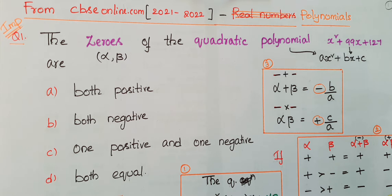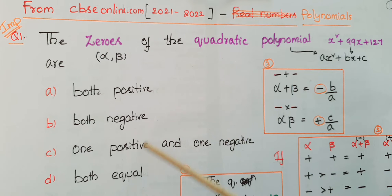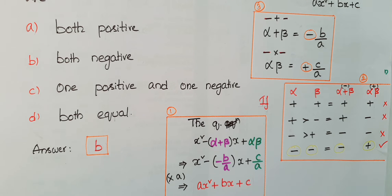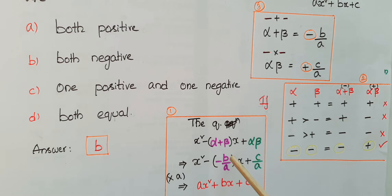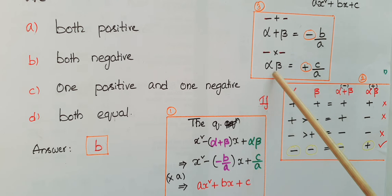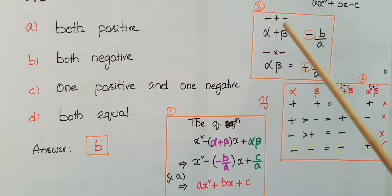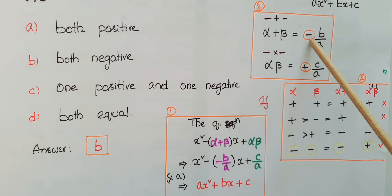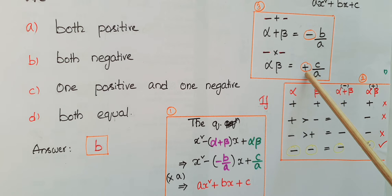This is the first question: the zeros of the quadratic polynomial x² + 99x + 127 are — with some options given. We know that a quadratic polynomial has degree 2, in the form ax² + bx + c. The sum of the zeros alpha + beta equals −b/a, and the product of the zeros alpha·beta equals c/a. So if you add the two zeros you should get a negative sign, and if you multiply them you should get a positive sign.